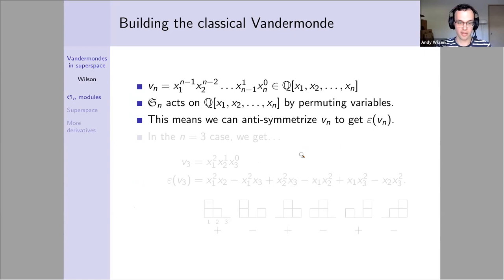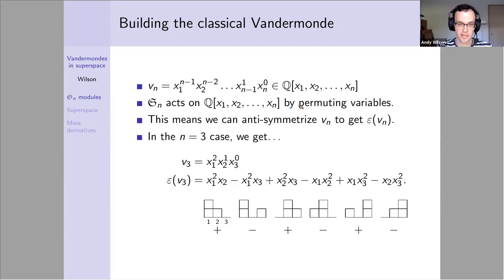To give an example, the classical example is the Vandermonde matrix or Vandermonde determinant. We start with this monomial, a descending staircase monomial in n variables. The symmetric group acts by permuting these variables, which allows us to anti-symmetrize. Here's a toy example when n equals three: our staircase has x_1 squared, x_2 to the first, and x_3 to the zero, depicted by this first diagram on the left.